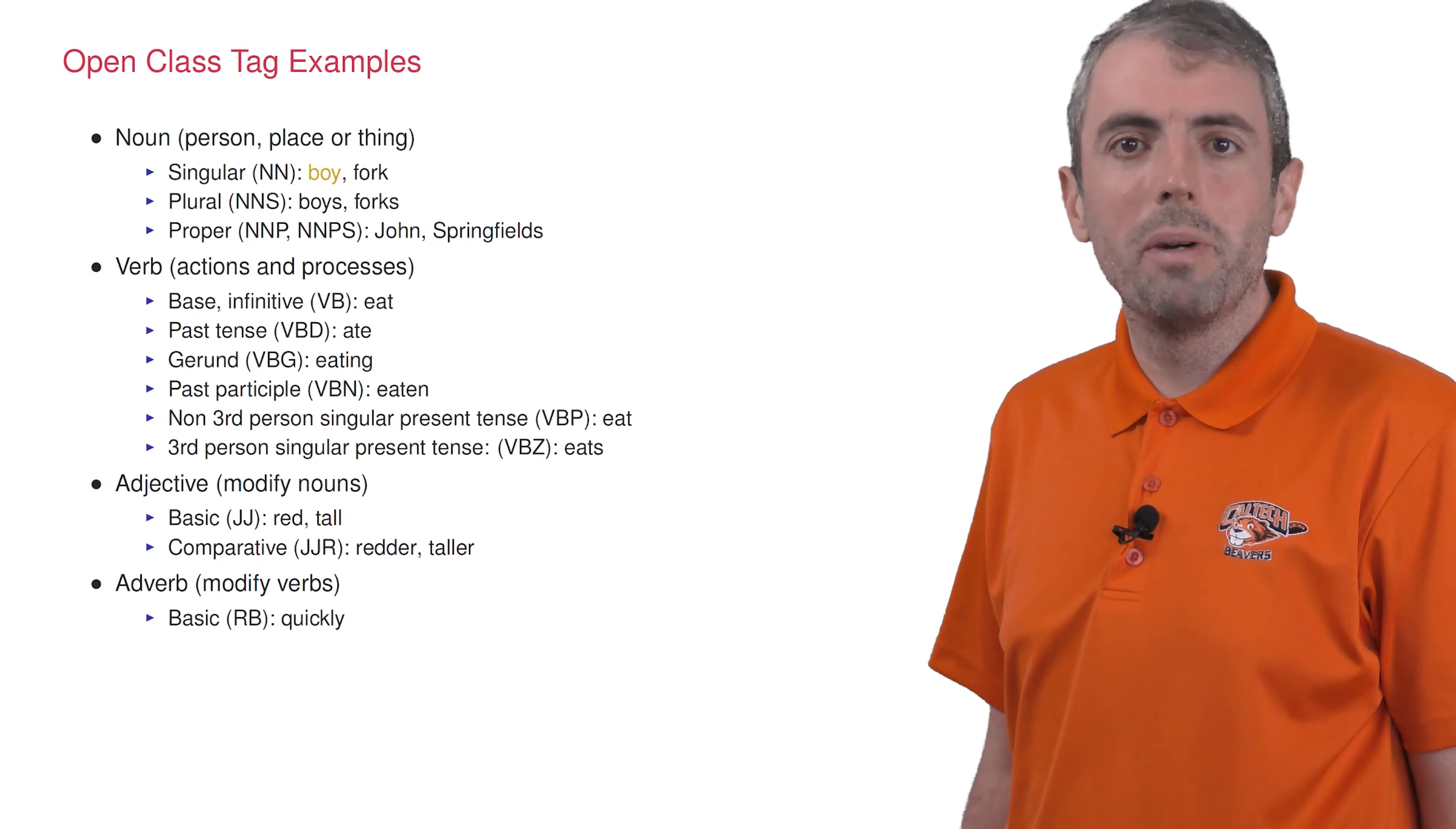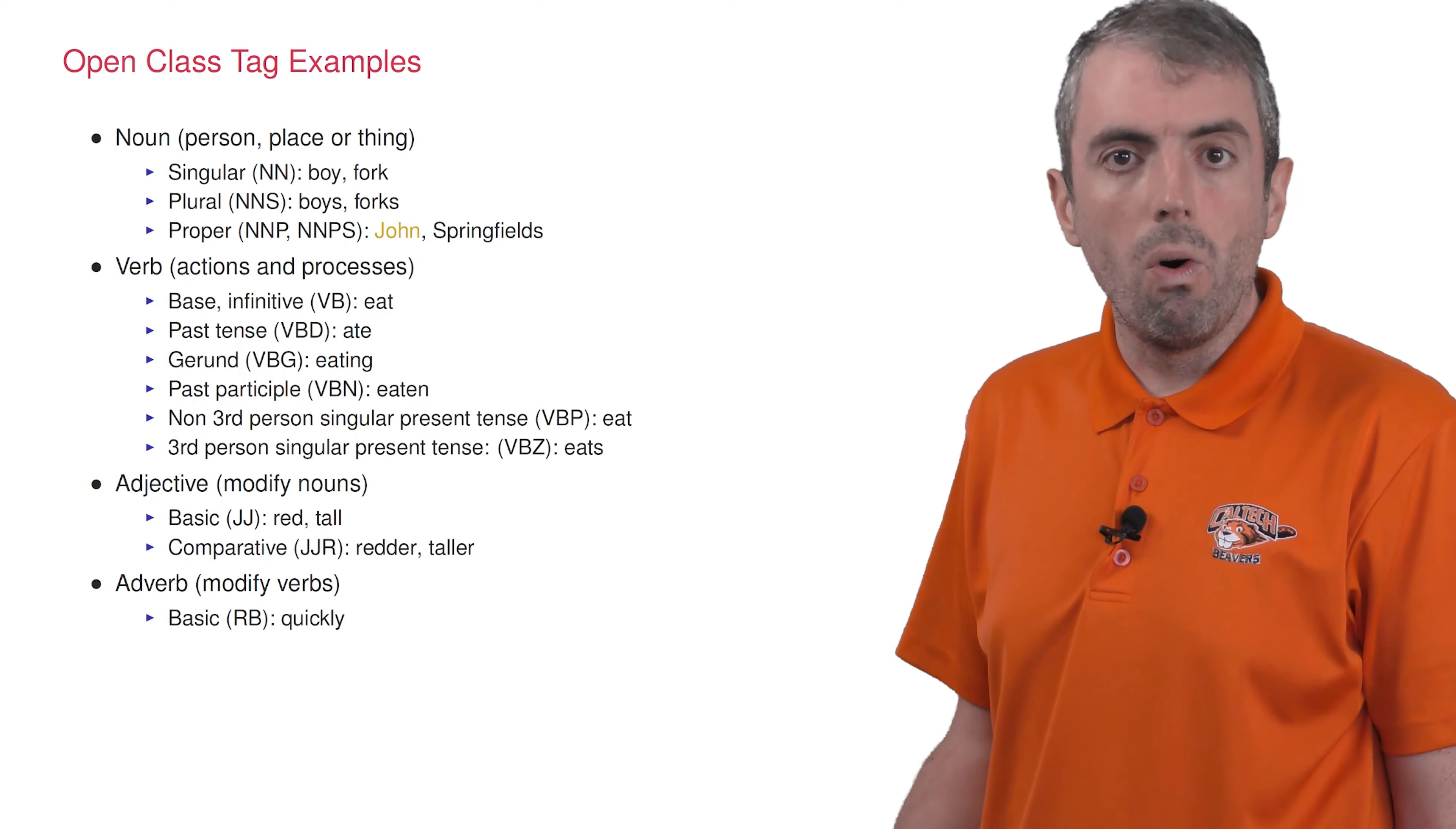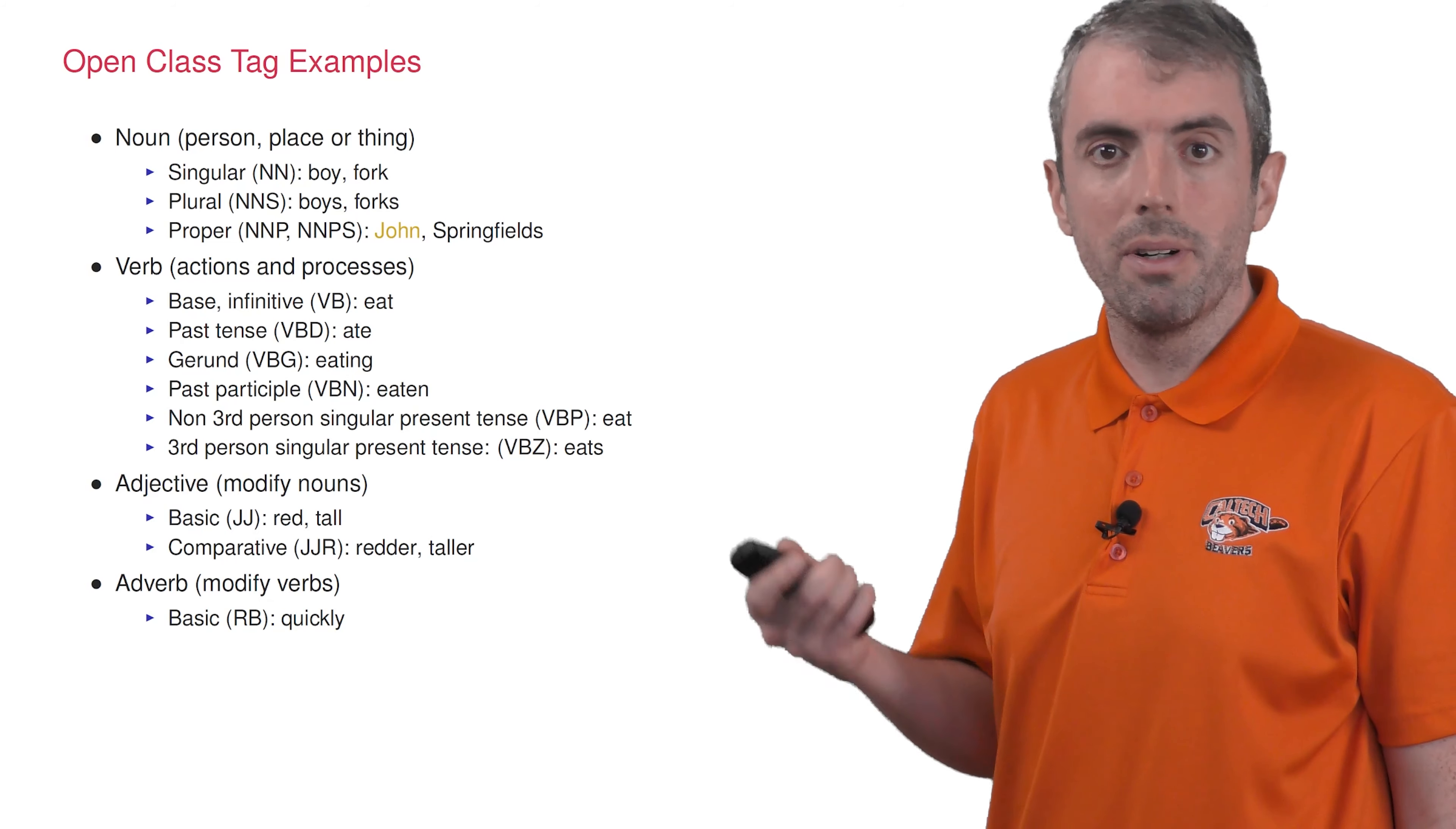Let's see some examples of open class parts of speech. Nouns are things you can touch. They can be singular or plural. Another example of a noun is a proper noun. In English, these are usually capitalized because somebody gave them this particular name. While boy is a common noun, singular, somebody gave this particular boy the name John. And when that name appears in a text, it's a proper noun.